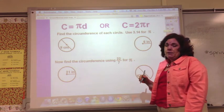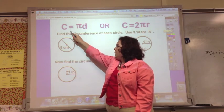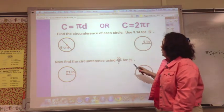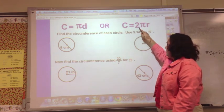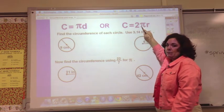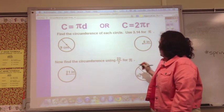For circumference, there's two formulas depending on what you're given. If you have the diameter, you use C equals pi d, pi times diameter. If you're given the radius, you use C equals 2 pi r, two times pi times radius.